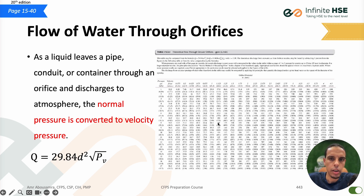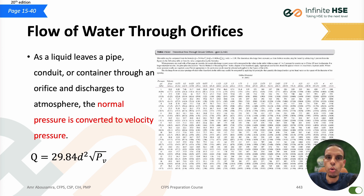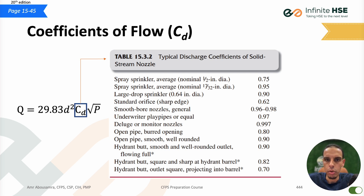This is called the theoretical flow. Why do we call it theoretical? Because in actual conditions, not all orifices are alike — the material is different and not all are perfectly circular. So this is theoretical, not actual. To get the actual value, we need to add one component: the coefficient of flow.